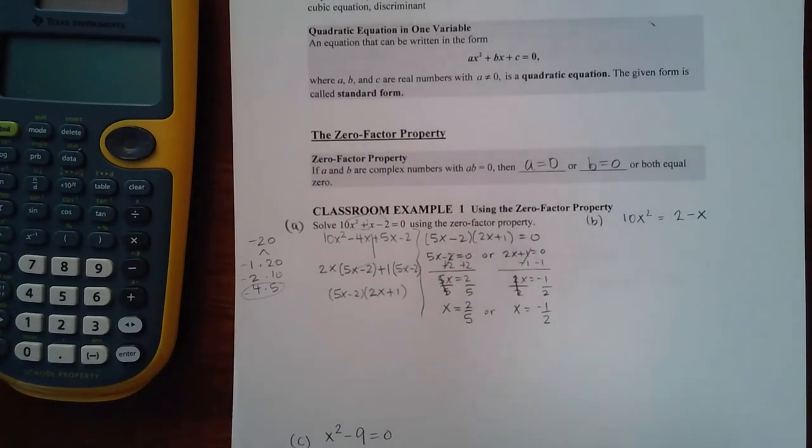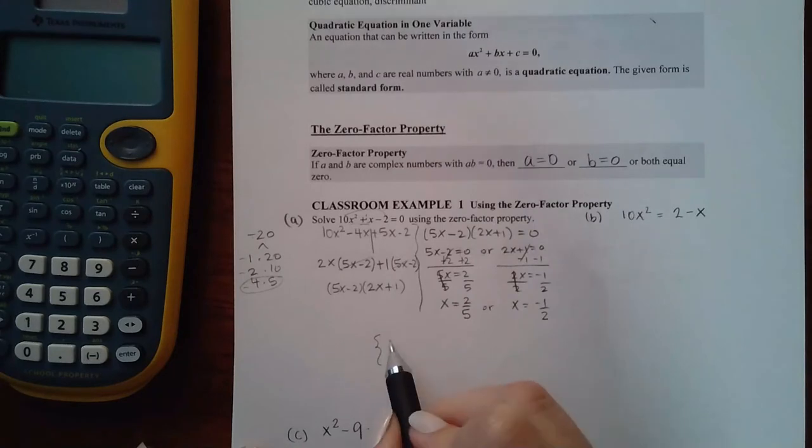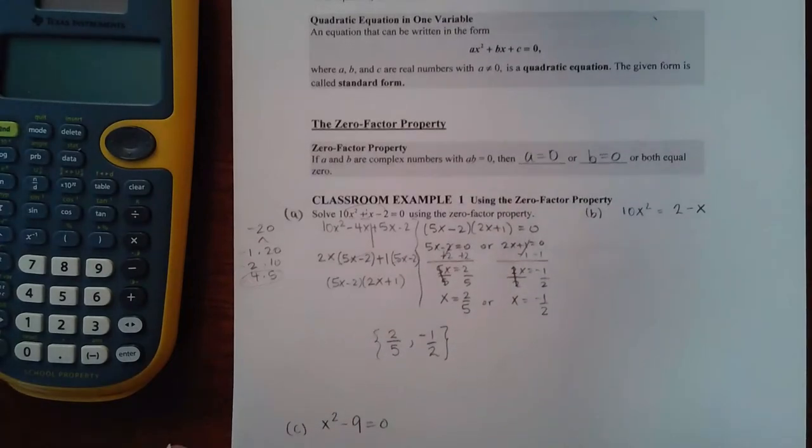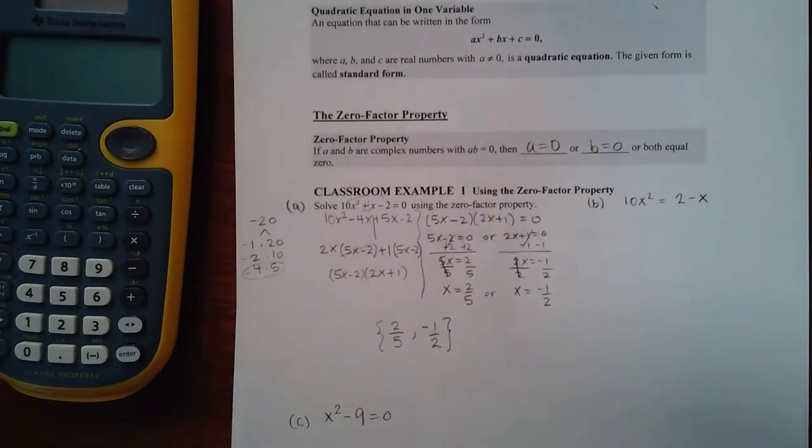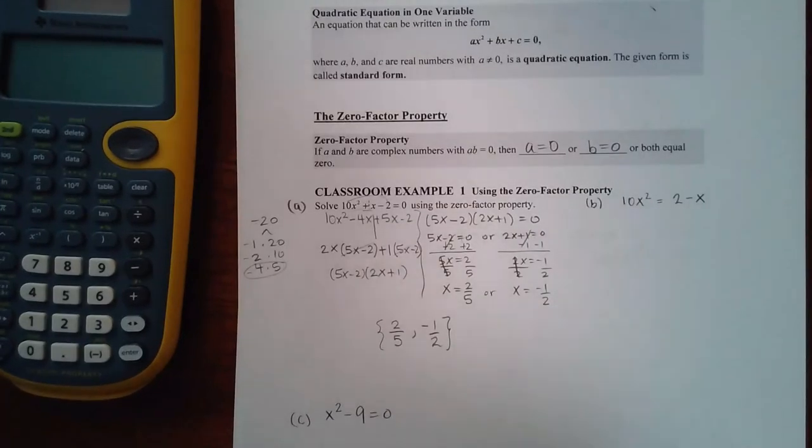So I get two answers here. Now depending on how the computer wants you to select them, they may ask you for what's called the solution set, and in that case you just put both of your answers as a list inside a pair of braces. That's the solution set. The answer could be 2/5, the answer could be negative 1/2, or both of them could be the answer.